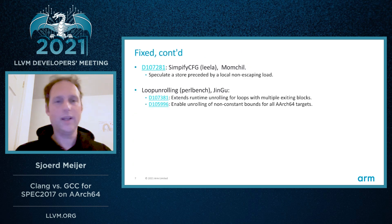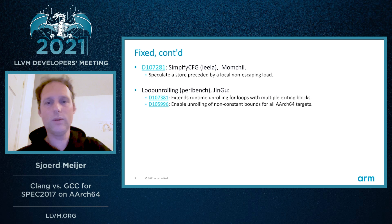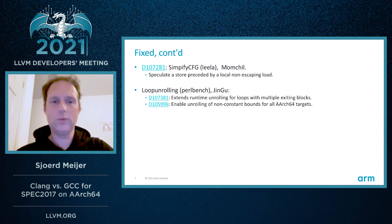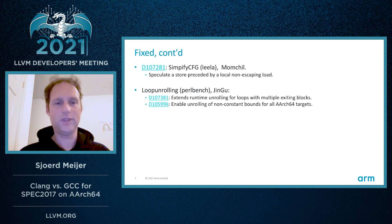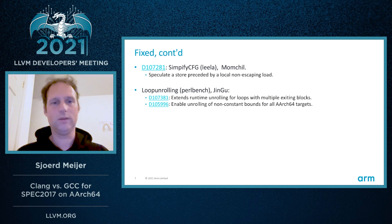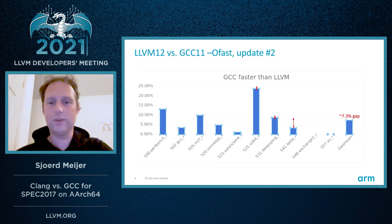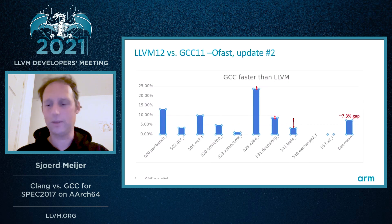We continued working on SimplifyCFG — there was a trick to speculate a store preceded by a local non-escaping load that could be fixed. We did quite some work on loop unrolling: the first was to extend runtime unrolling of loops with multiple exit blocks, and slightly more target-specific, enabling unrolling of non-constant bounds for AArch64 targets. That had impact on X264, DeepShang, and a big impact on Lila. We are now 7.3% behind, and that's where we are today.